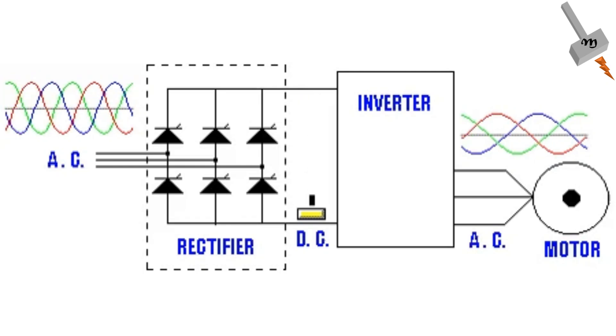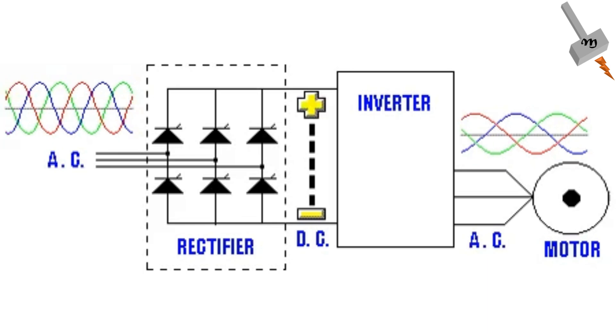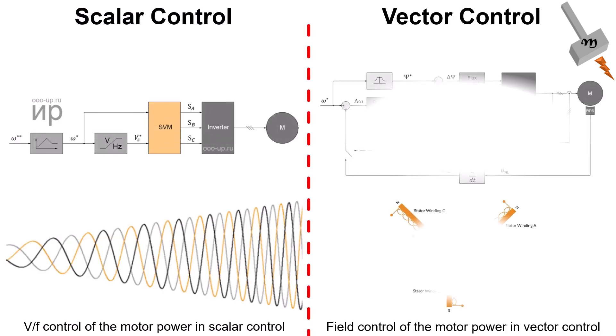The converter technology or the variable frequency drives control the speed by adjusting the frequency of the supplied voltage. There are two primary methods of control in VFD – scalar control drives and vector control drives. The converter system used in Vande Bharat is vector-controlled converter.